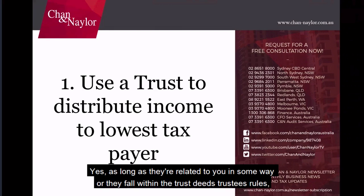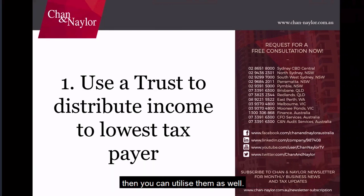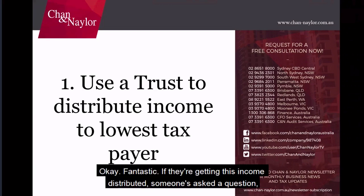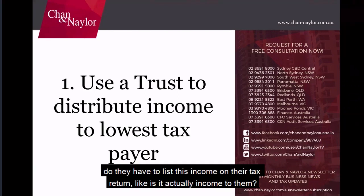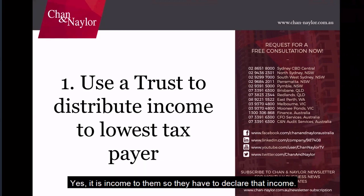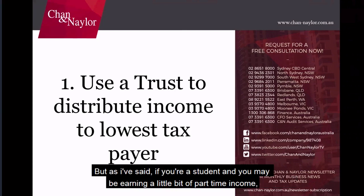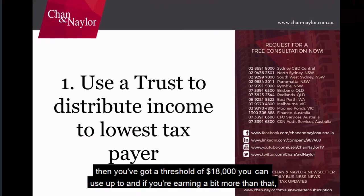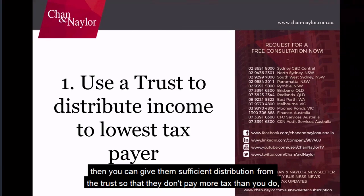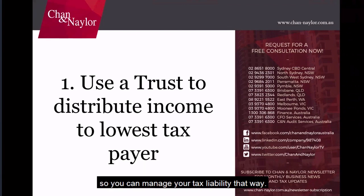As long as they're related to you in some way or fall within the trustee's rules, you can utilize them as beneficiaries. If they receive distributed income, they do have to declare it on their tax return — it is income to them. But if they're a student earning a little part-time income, they have an $18,200 threshold to use. You can give them sufficient distribution from the trust so they don't pay more tax than you, managing your tax liability that way.